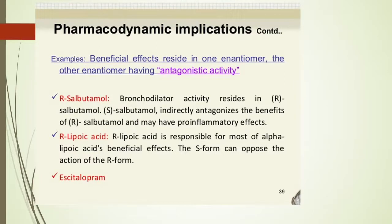Some distomers have antagonistic activity. The first example is the famous drug R-salbutamol, used for bronchitis. Its activity resides in the R-salbutamol, whereas S-salbutamol indirectly antagonizes the benefit of R-salbutamol — meaning S will reduce the activity of R. In this case, we need to purify these two forms for better activity; we need only R-salbutamol in a pure enantiomeric form. Similarly, we have R-lipoic acid and other compounds.